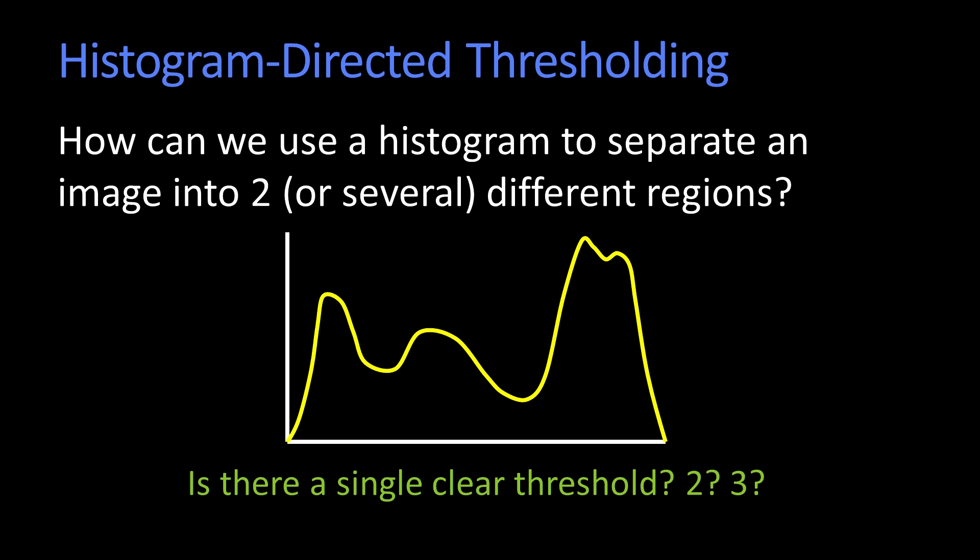Generally what you do when you're looking for thresholds is you take a histogram of the intensities. So this might go from 0 to 255, and this is the number of pixels that you have in the image.